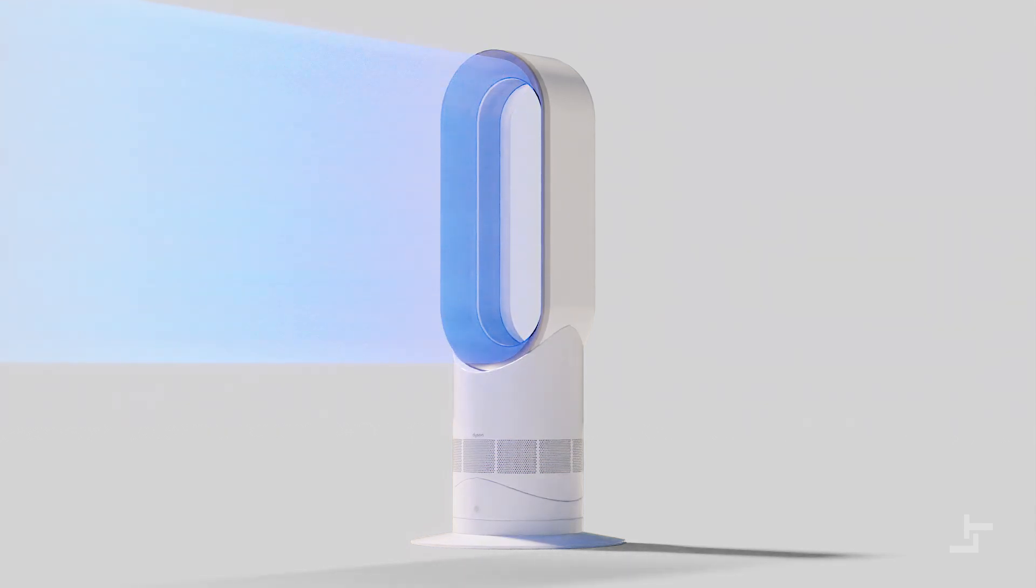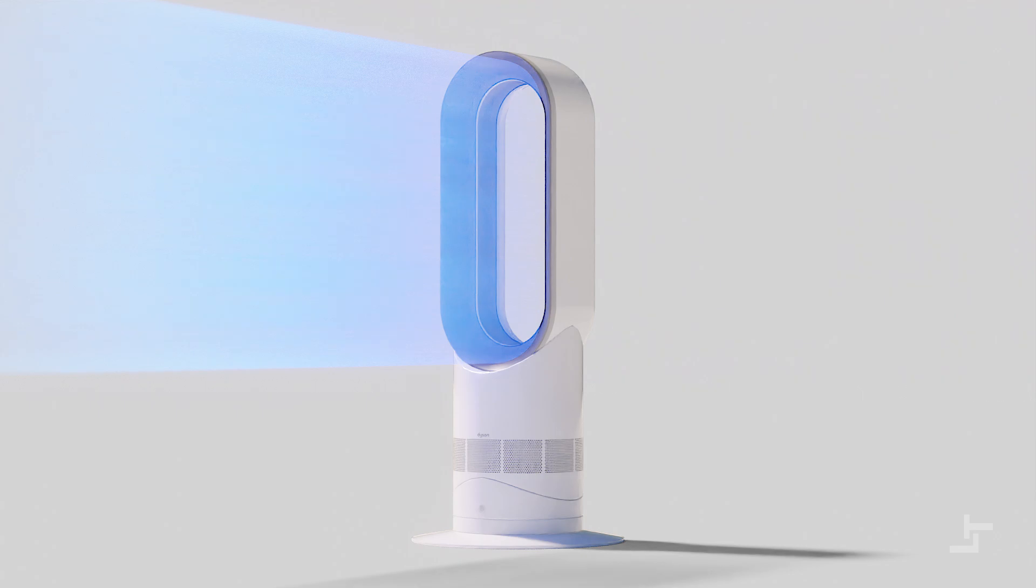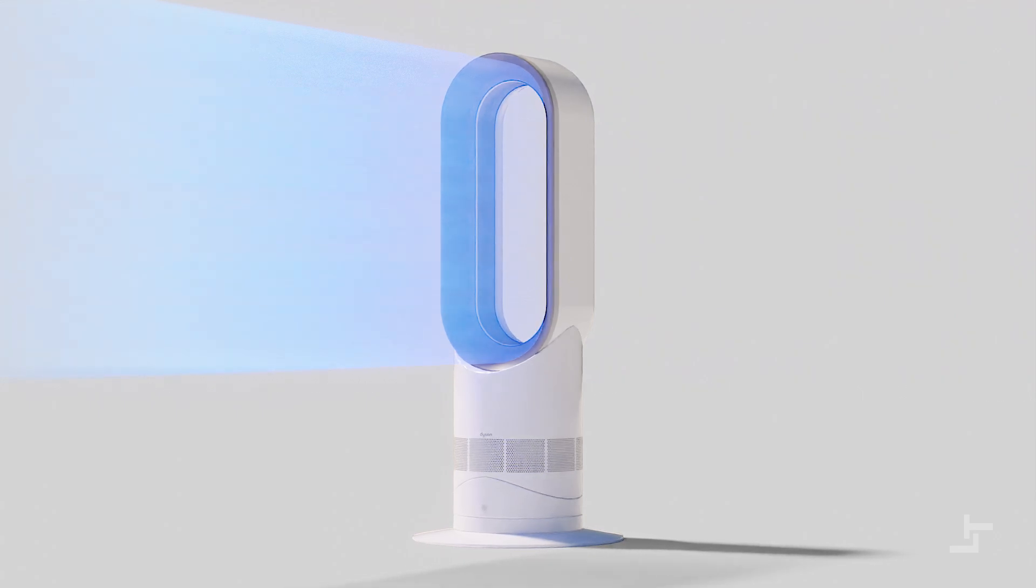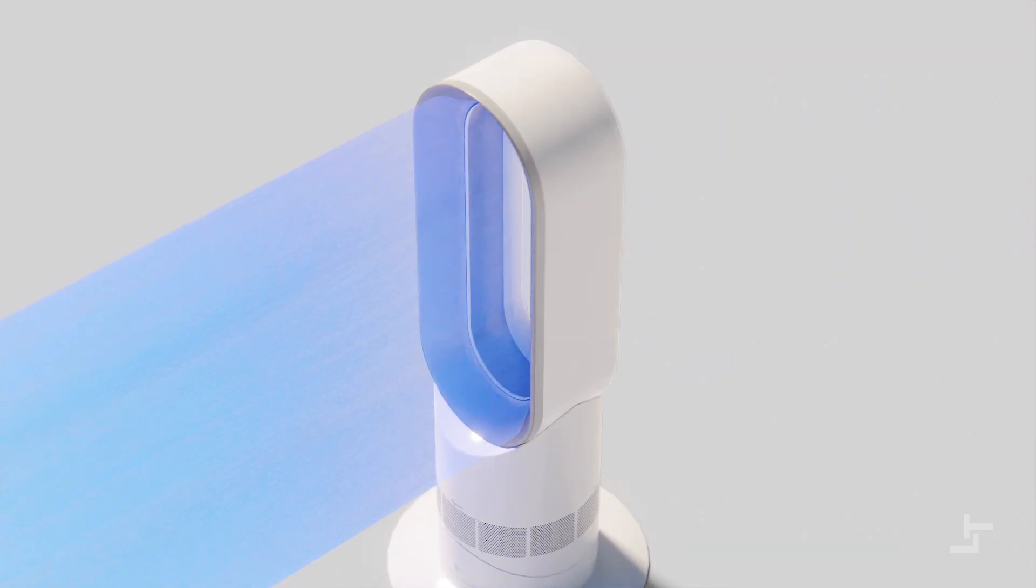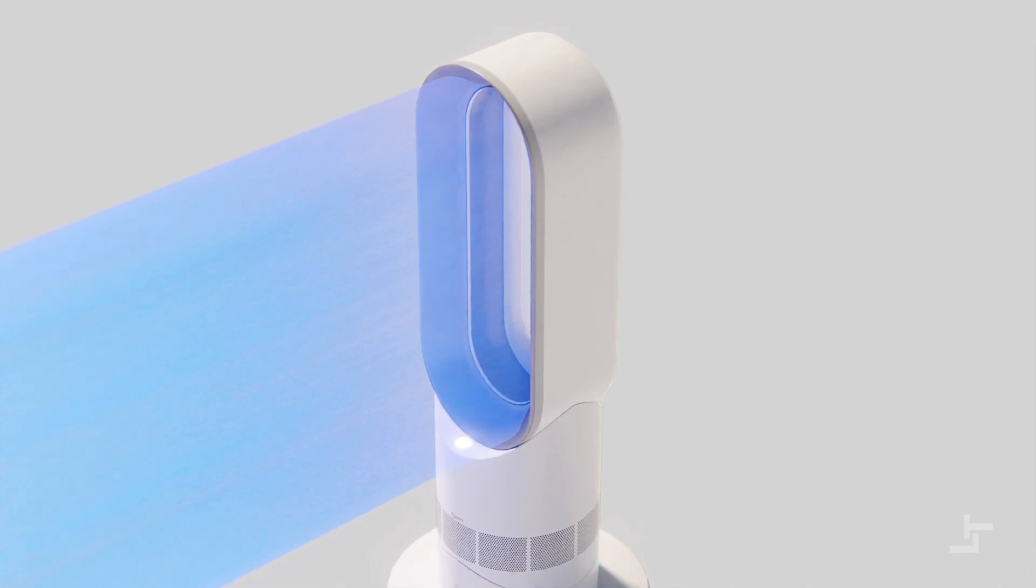Bladeless fans, also known as air multipliers, operate on a different principle compared to traditional bladed fans. Contrary to their name, bladeless fans do have blades, albeit hidden rather than exposed, as they are utilized in a very different way to generate airflow. The following animation will break down how they typically work.